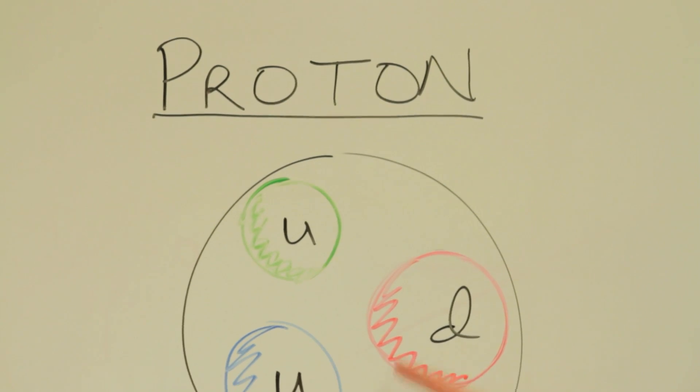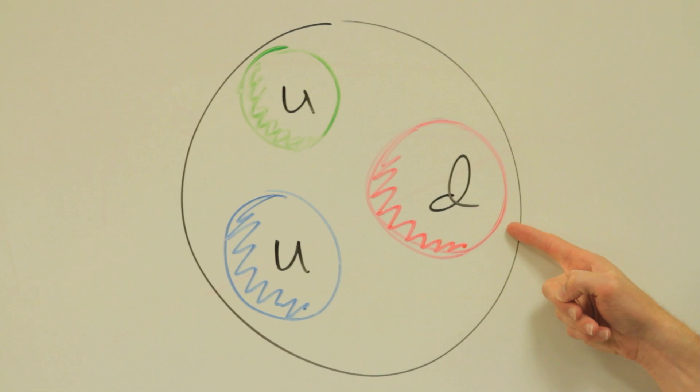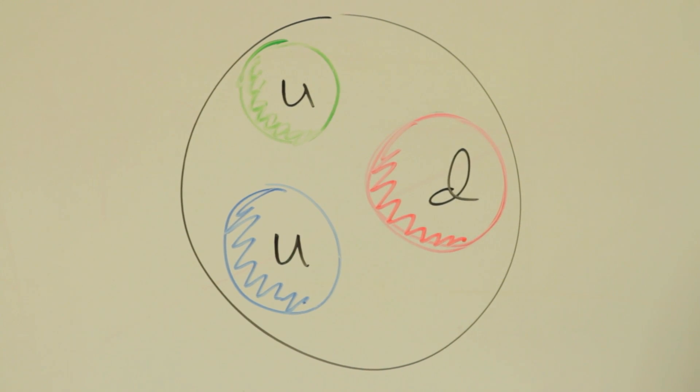In a proton is an up, an up, and a down quark, and they are fractionally charged, giving the proton a positive one charge overall.